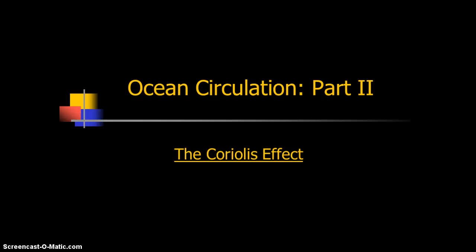Welcome class. Professor Steve here with our first lecture capture on our Ocean Circulation Part 2 unit. We're going to briefly go over what the Coriolis effect is. In order to understand the remainder of the ocean circulation patterns, primarily which take place in the surface ocean, you have to understand atmospheric circulation. Both ocean circulation and atmospheric circulation and many other things we depend on on Earth are affected by the Coriolis effect.